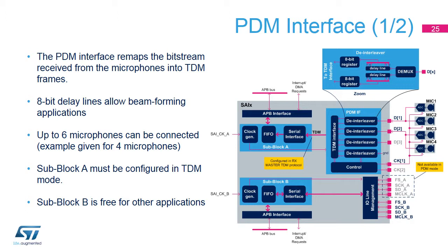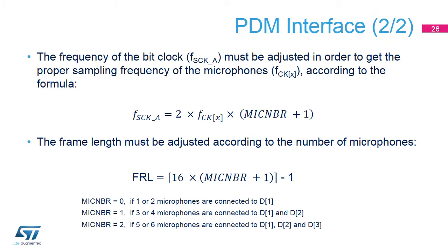Sub-block B is still available for other applications and can be used to connect an external device using TDM, PCM, I2S, or any other supported protocol. With this PDM interface, the bit clock frequency has to be adjusted according to the sampling frequency and the number of microphones. The frame length is also adjusted according to the number of connected microphones.